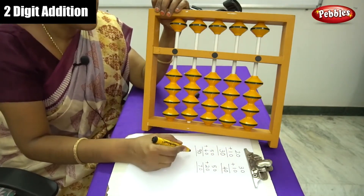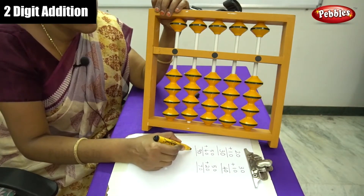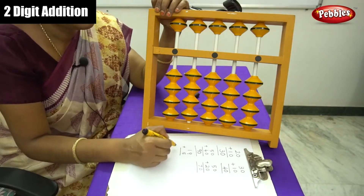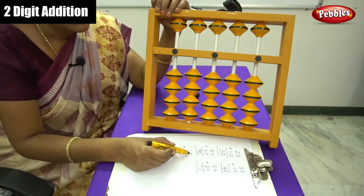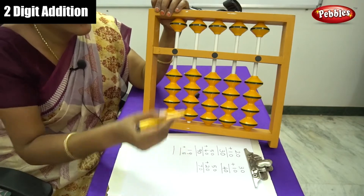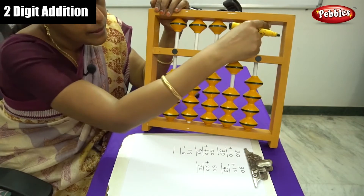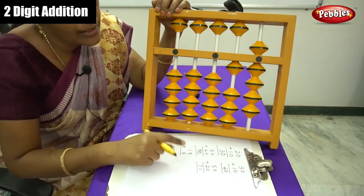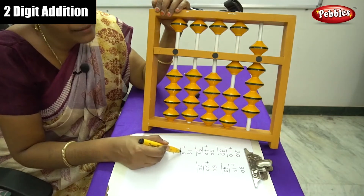Next we move on to an example of two-digit number plus single-digit number: 19 plus 5. The first number has two digits — 1 in the tens place and 9 in the ones place, making 19. Arrange those beads on the abacus: 1 in tens and 9 in ones.